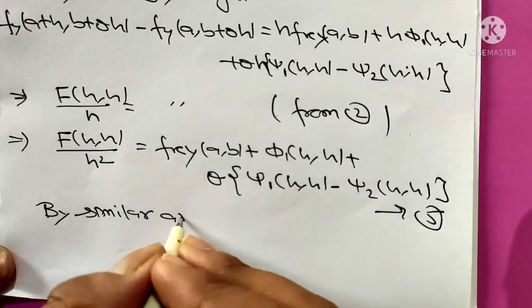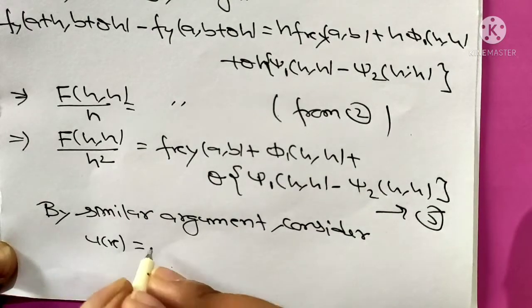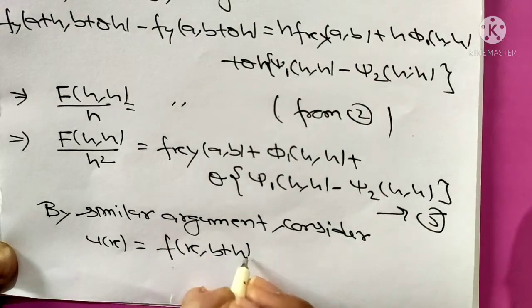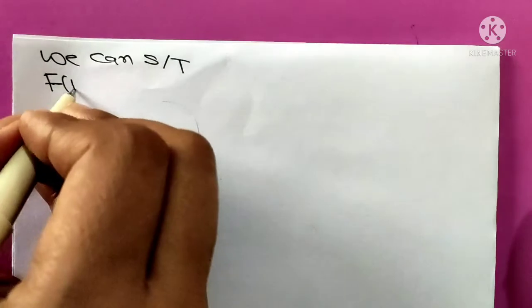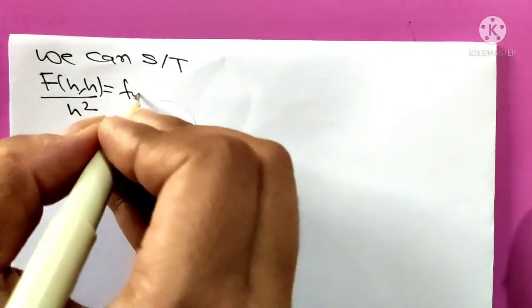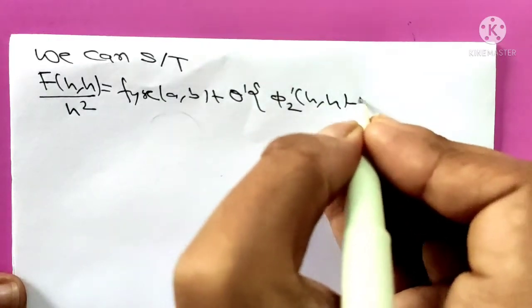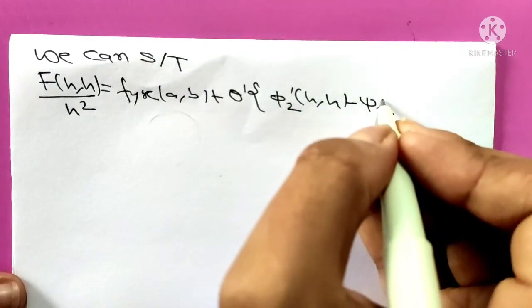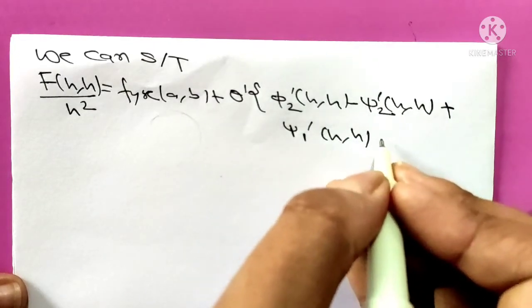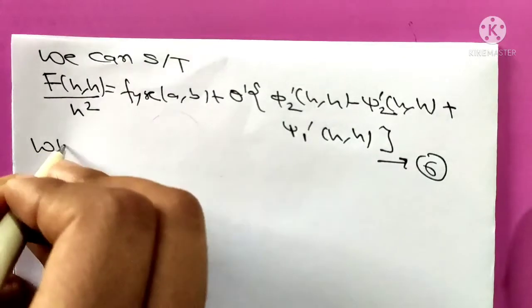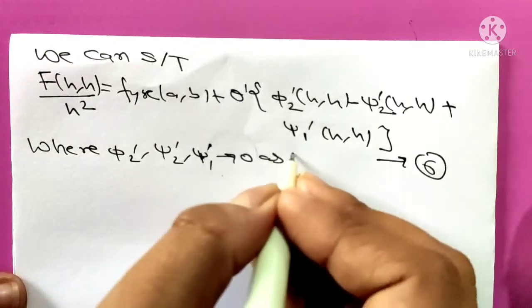By similar argument, consider again we are going to consider function u(x) = f(x, b+h) minus f(x, b). We can show that F(h,h) upon h² equals fyx(a,b) plus θ'[φ2'(h,h) plus ψ1'(h,h) minus ψ2'(h,h)]. Give it equation 6, where φ2', ψ2', ψ1' tend to 0 as h tends to 0.